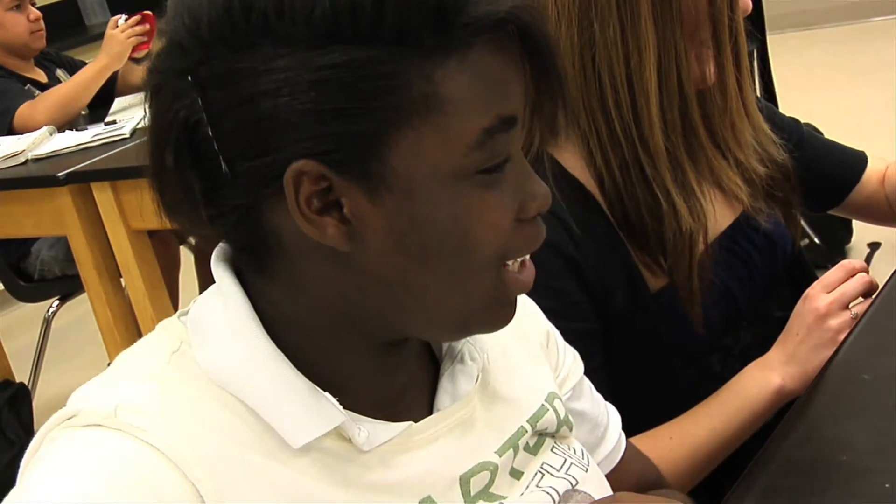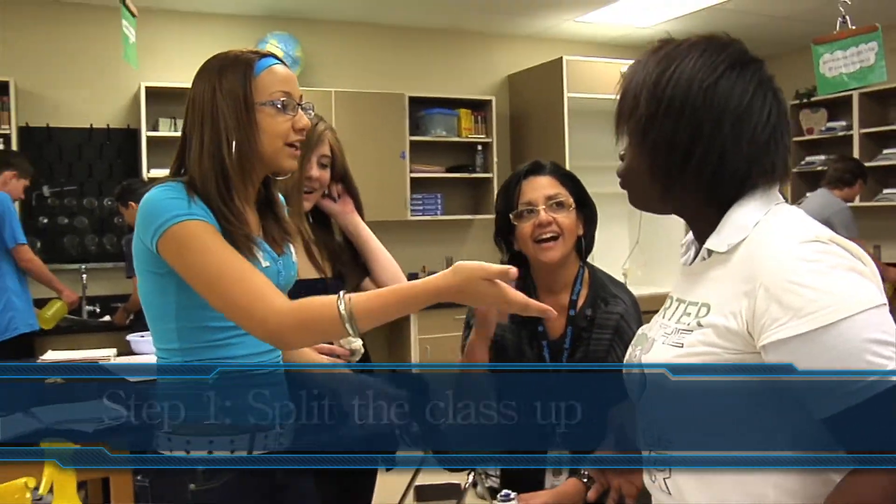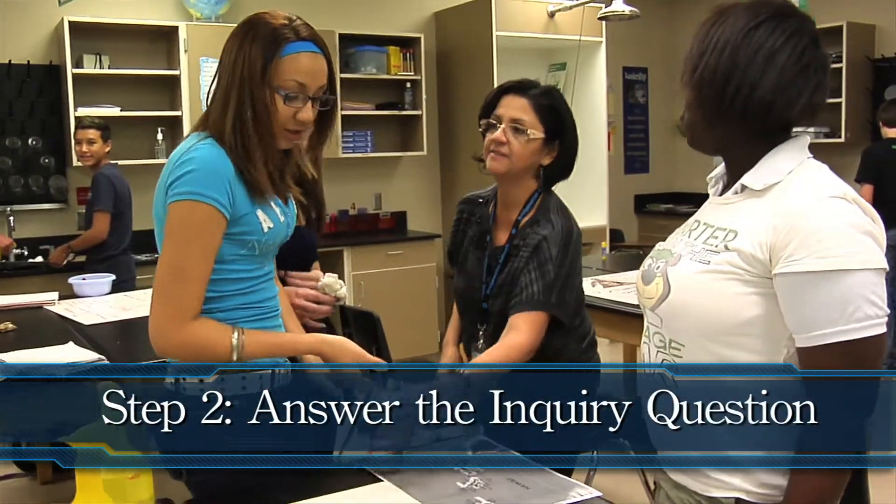Now onto the lab. This lab only requires that you split the class up and assign each group to answer the inquiry question. Students should draw a series of pictures depicting the formation of astronomical bodies. For the sake of time, it may be advisable for them to split up the work.